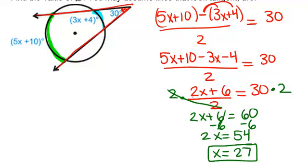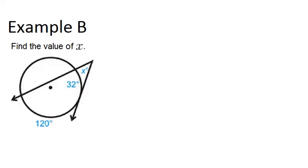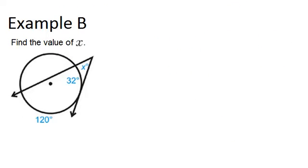Alright, let's look at example B. Find the value of x. Here we have a secant line that intersects the circle twice and a tangent line that intersects the circle once. The same relationship that we used in the last example will work here. The bigger arc of 120 degrees